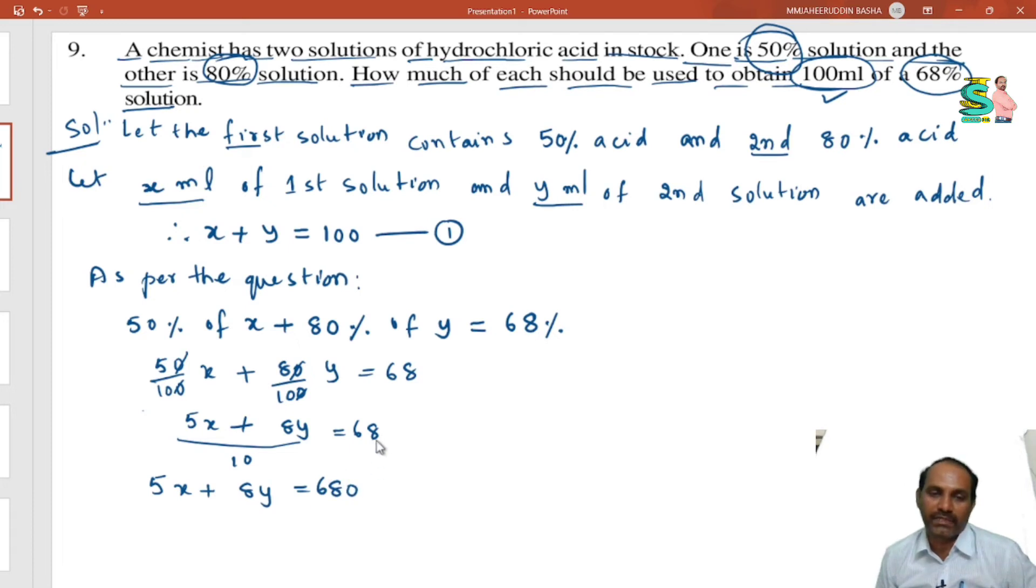I mean 680. This is equation number 2. Now, you can subtract. Look at here the two equations x plus y. We can eliminate the y value here so that we can make them equal. So, equation 1 times 8 minus equation 2.